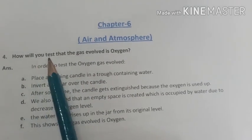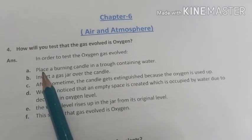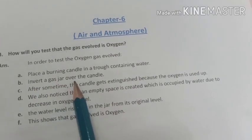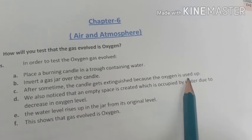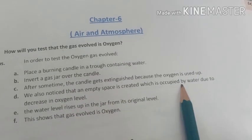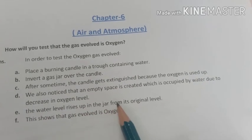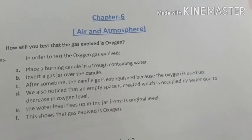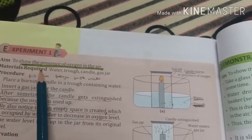Fourth question: how will you test that the gas evolved is oxygen? Answer: first, place a burning candle in a trough containing water. Second, invert a gas jar over the candle. Third, after some time, the candle gets extinguished because the oxygen is used up. Fourth, we also notice that an empty space is created, which is occupied by water due to the decrease in oxygen level. Fifth, the water level rises up in the jar from its original level. This shows that the gas evolved is oxygen. Also draw figure 6.4 from activity/experiment 1 to show the presence of oxygen in air.